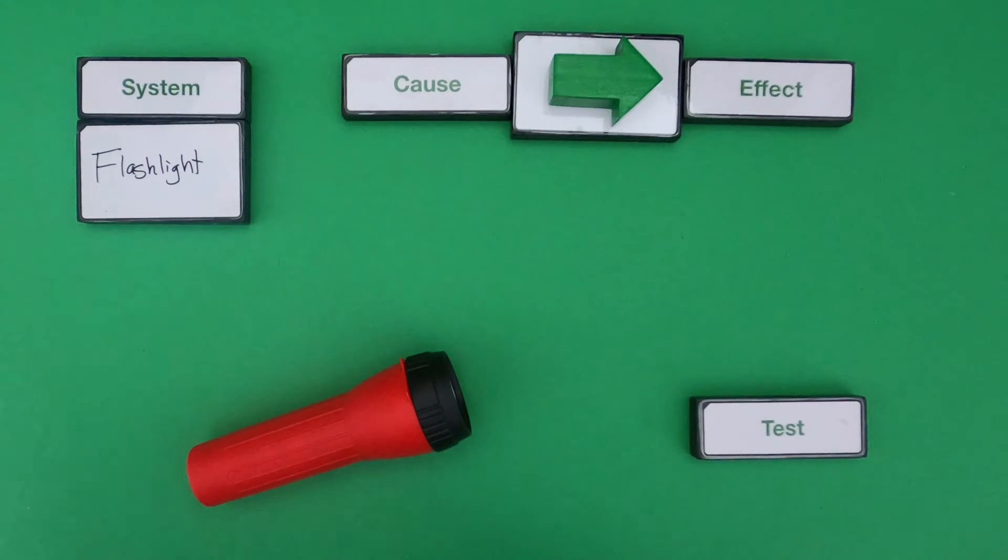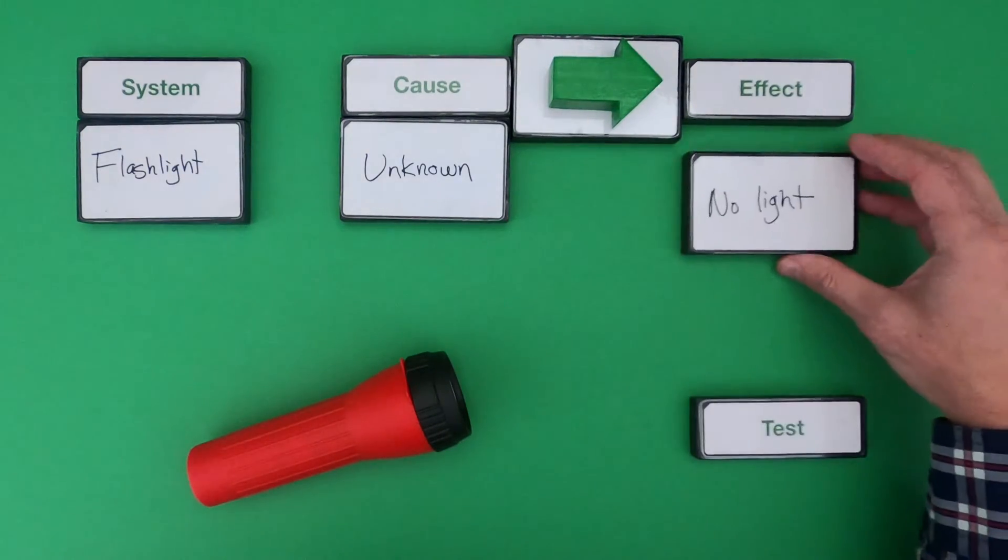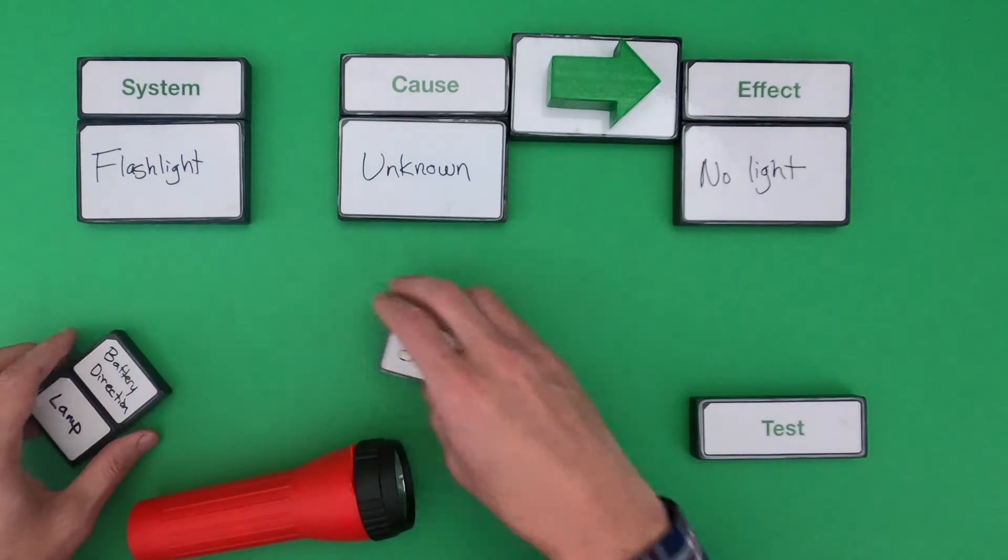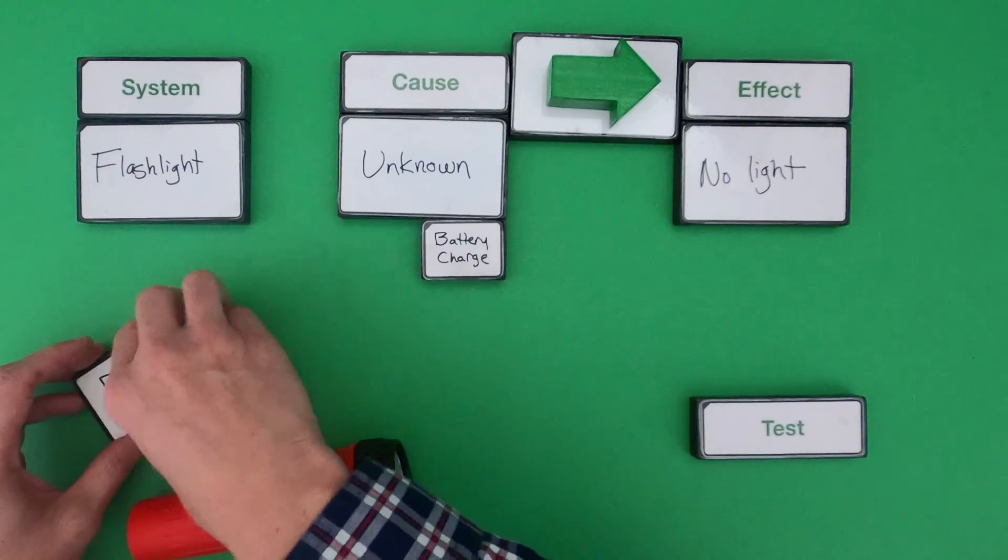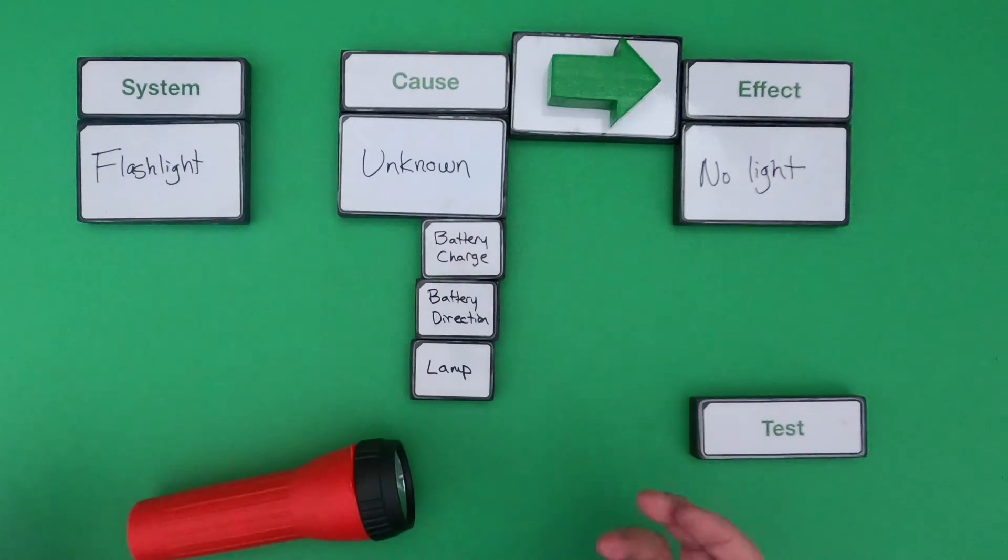Okay, for me to show you some of my thinking, again, the cause is unknown. The effect would be that we have no light. First thing I would do would be brainstorm some ideas of possible causes. It could be that the battery doesn't have a charge. It could be the battery's direction is wrong, or maybe we have a lamp that's broken. Next thing we would do is we would want to develop a test.